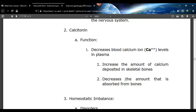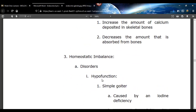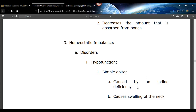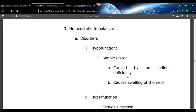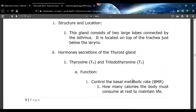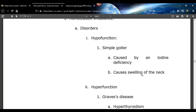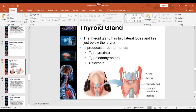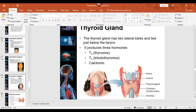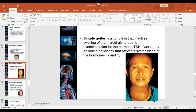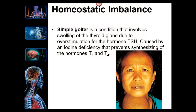These are some disorders of the thyroid gland — not all, just a few. Not enough T3 and T4 is called goiter. If your body is lacking iodine, it can't synthesize T3 and T4, so as a result the thyroid gland gets super swollen. See her throat down here — that's simple goiter, an iodine deficiency.